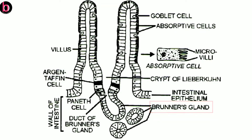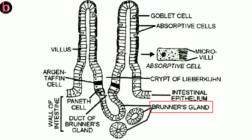Brunner's gland, as seen in the diagram, is found only in the submucosa of the duodenum. As we know, the duodenum is the first part of the small intestine and is C- or U-shaped in structure. Brunner's gland also opens into the crypts of Lieberkühn.